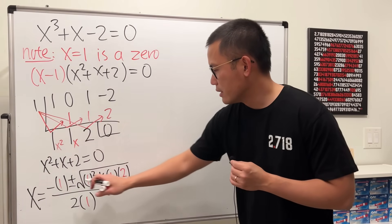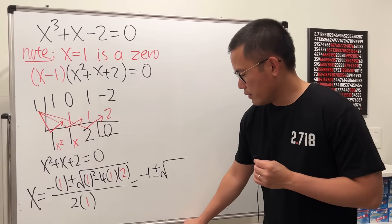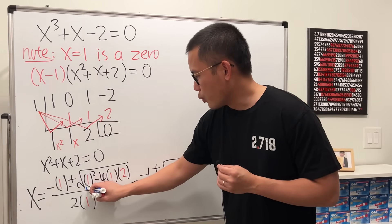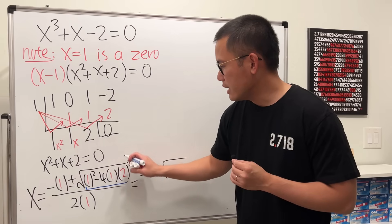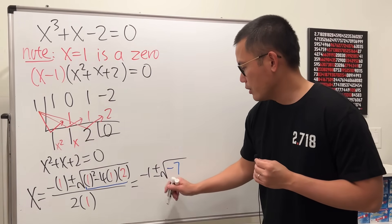Okay, so let's see what do we have. This is negative 1 plus or minus square root, for this, this is 1 and then minus 8, so that will be negative 7, and then over 2.